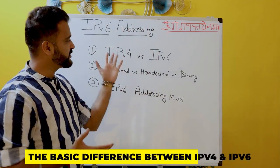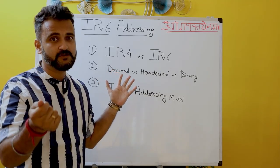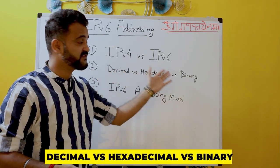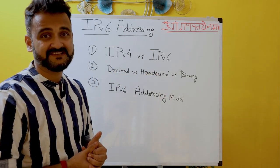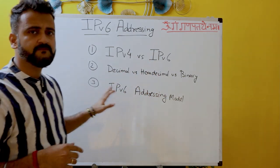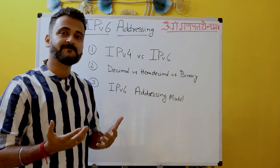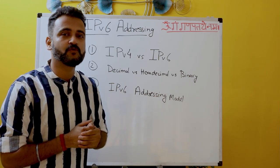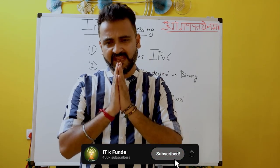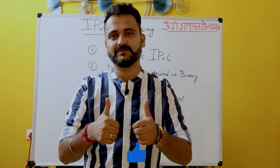In this video, we'll understand the basic difference between IPv4 and IPv6. We'll also understand a mathematical concept very handy for exams and interviews: decimal versus hexadecimal versus binary — how these numbering systems connect, and how hexadecimal directly connects with IPv6. Lastly, we'll cover the basics of the IPv6 addressing model. If you are new, please consider subscribing, and if you get any value, please hit the like button.